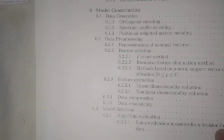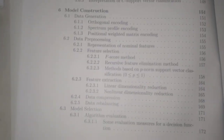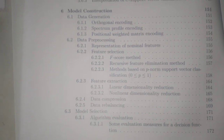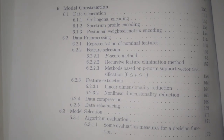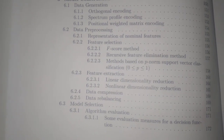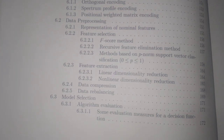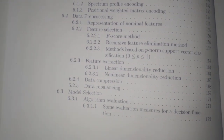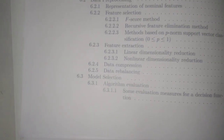Chapter 6 addresses model construction, covering data generation, orthogonal encoding, spectrum profile encoding, and positional weighted matrix encoding. Data pre-processing includes representation of nominal features, feature selection using F-score methods, recursive feature elimination, methods based on p-norm support vector classification, and feature extraction including linear and non-linear dimensionality reduction.